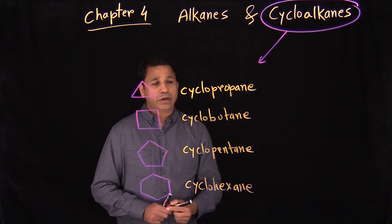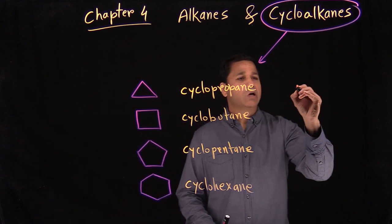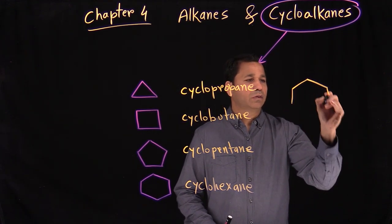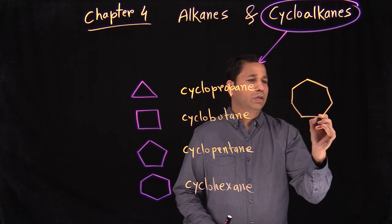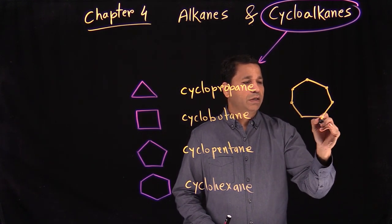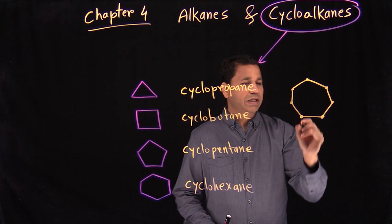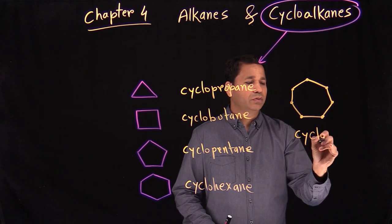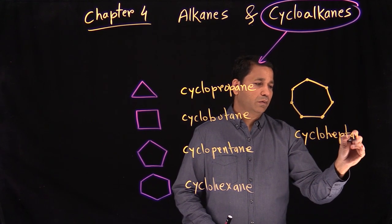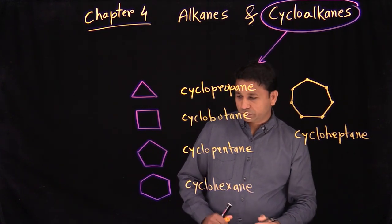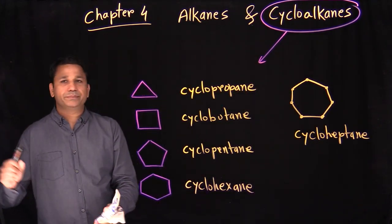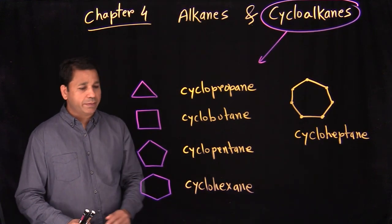We can also have seven carbons or eight carbons. So with seven carbons — one, two, three, four, five, six, and seven — that will be cycloheptane. Seven carbons is heptane, so that becomes cycloheptane.